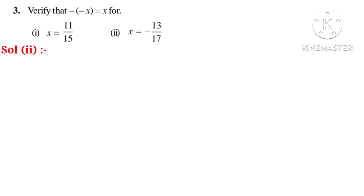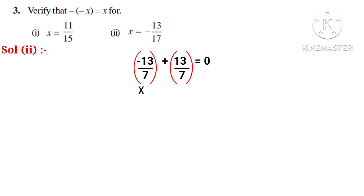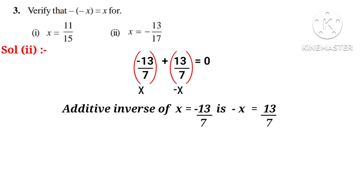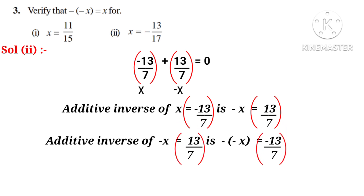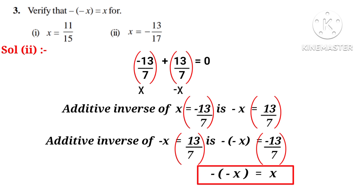Solution 2: we know that minus 13 by 7, when added to 13 by 7, gives 0. Taking minus 13 by 7 as x, then 13 by 7 becomes minus x. So the additive inverse of x (minus 13 by 7) is minus x which equals 13 by 7. And the additive inverse of minus x (13 by 7) is minus of minus x which equals minus 13 by 7, which is x. So minus of minus x equals x. Hence it is proved.